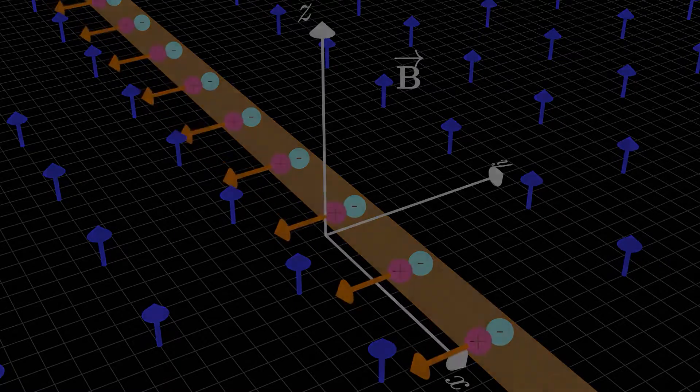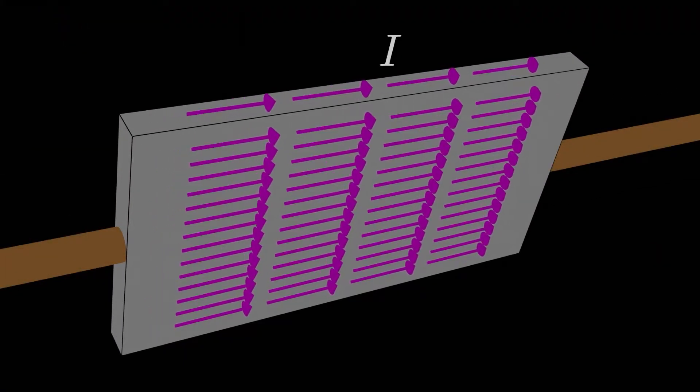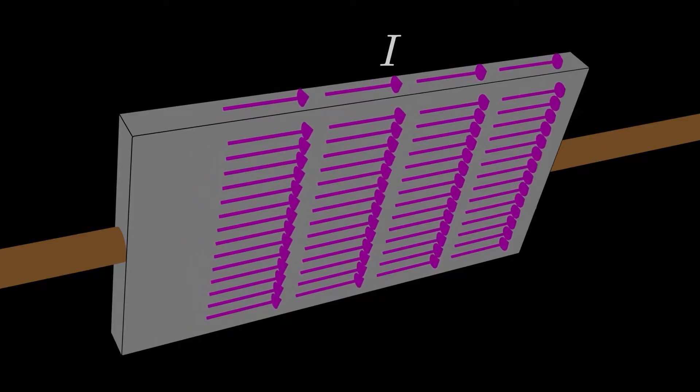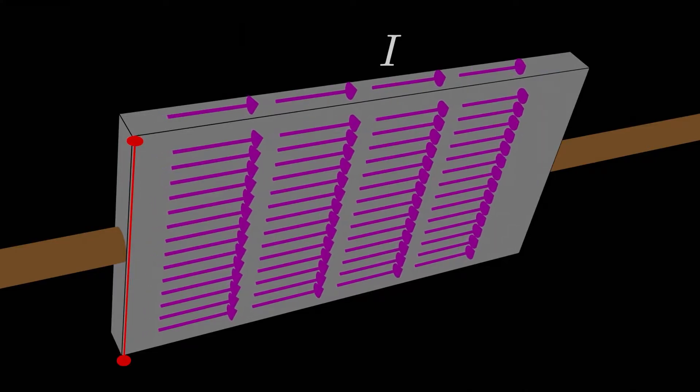But what if the current wasn't flowing through a wire? What if we had electric current going through a thin metal slab like this? It's thin in one dimension, but thick in the other dimension. What happens now?